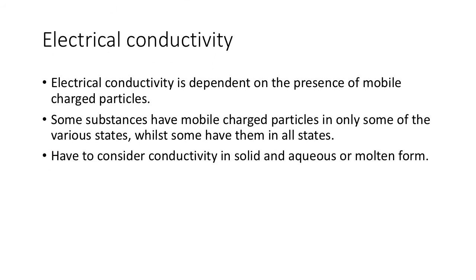Electrical conductivity is dependent on the presence of mobile — meaning they can move — charged, meaning positive or negative, particles of some sort. So mobile charged particles are needed to conduct electricity, because effectively all electricity is moving charged particles. Some substances have mobile charged particles in only some states, whilst others have them in all states. So you might have substances which can conduct electricity in molten form but not in solid form, or they might conduct electricity in both solid and liquid form.